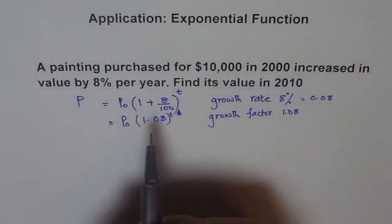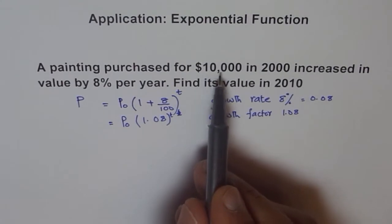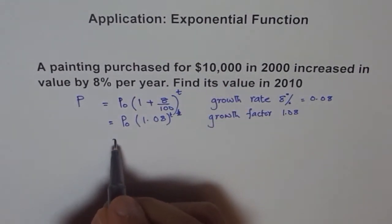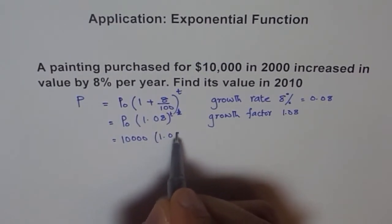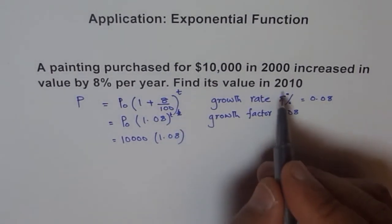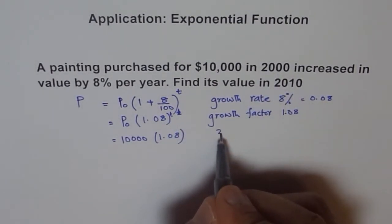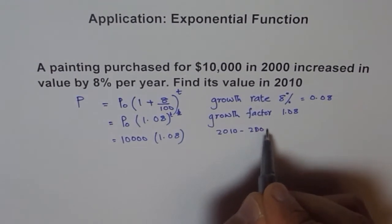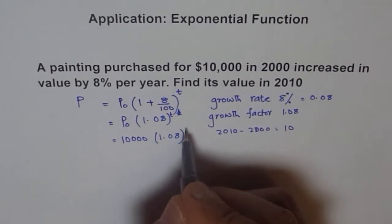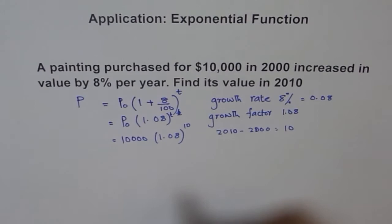Now since initial amount is 10,000, so P0 is 10,000. So we can write 10,000 here. And 1.08 to the power of T. And what should be T? T is 2010 minus 2000. So 2010 minus 2000, which is 10 years. So T is 10 years. So we will write 10 here. Now that is our final price.